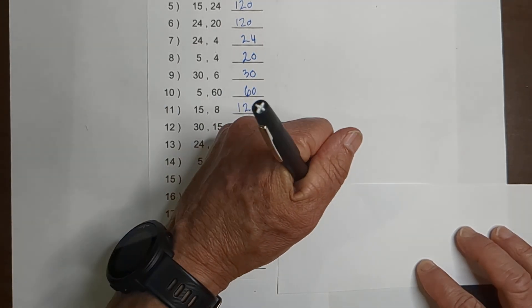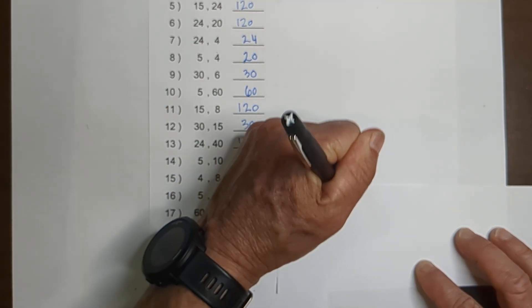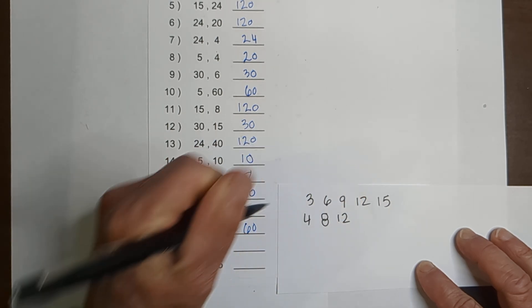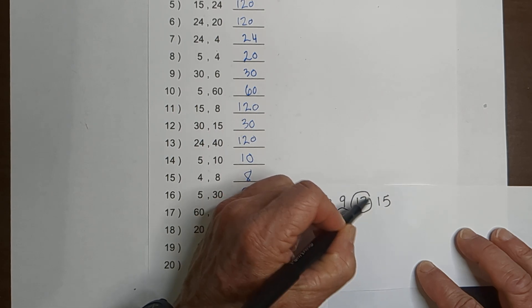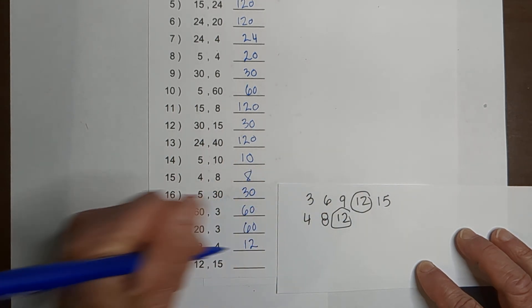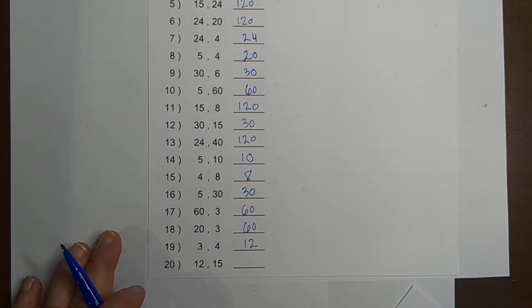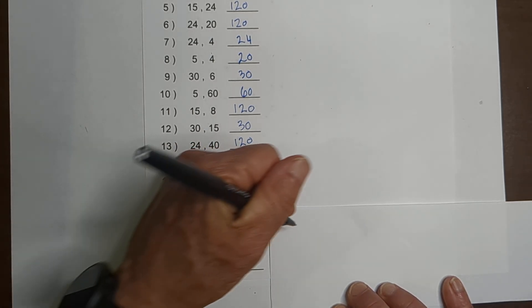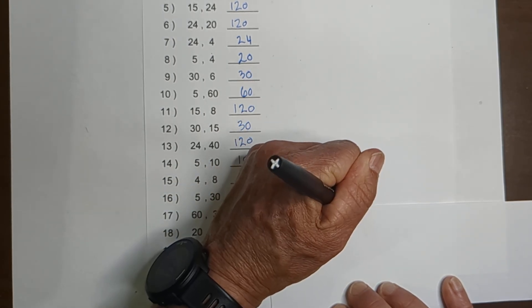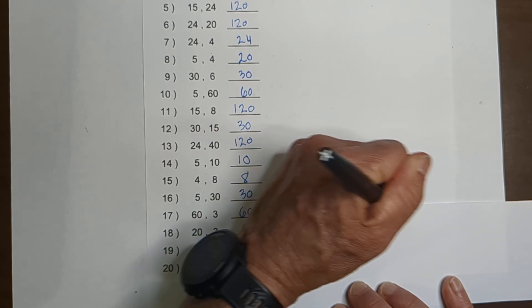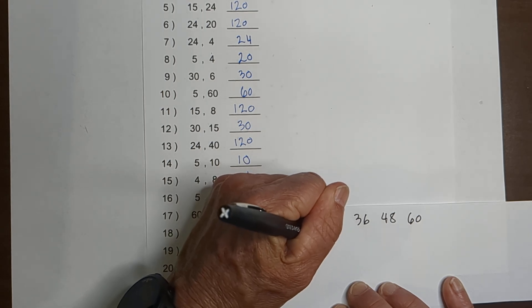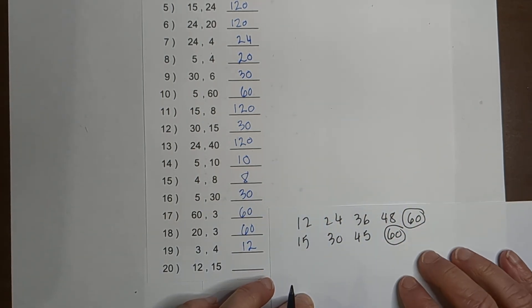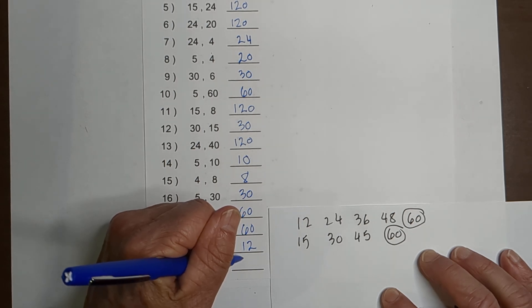I like this one — 3 and 4. Let's write out some factors: 3, 6, 9, 12. And then 4, 8, 12. Look — we have a common factor. So the LCM is 12. And let's work on the next one. I think it's probably a tie between a factor tree or writing out the factors, so let's write them out: 12, 24, 36, 48, 60. Then 15, 30, 45, and 60. There is our low factor. So the LCM is 60.